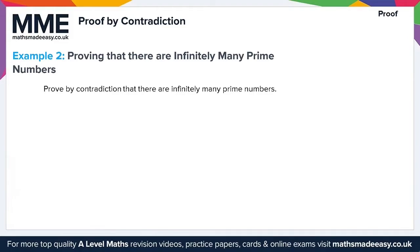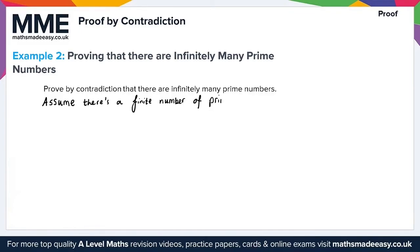Example 2 on proof by contradiction: proving that there are infinitely many prime numbers. We want to prove by contradiction that there are infinitely many primes. So to start, we assume the statement is not true — we assume there is a finite number of prime numbers.